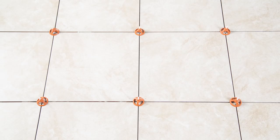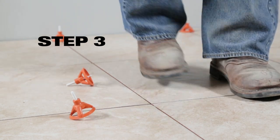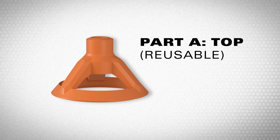Allow 24 hours for the thinset to set, before Step 3. Simply kick off the stem, saving the top, Part A, for future jobs.